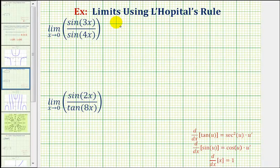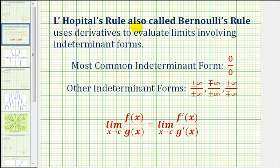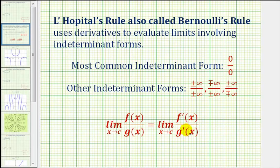Welcome back for two more examples of determining limits using L'Hopital's Rule. L'Hopital's Rule allows us to use derivatives to evaluate limits involving indeterminate forms. The most common indeterminate form is zero divided by zero, but there are others as well. It is important to remember that we can only apply L'Hopital's Rule if the limit involves an indeterminate form. If so, this limit equals the limit as x approaches c of f prime of x divided by g prime of x, meaning we can take the derivative of the numerator and denominator to determine the limit.